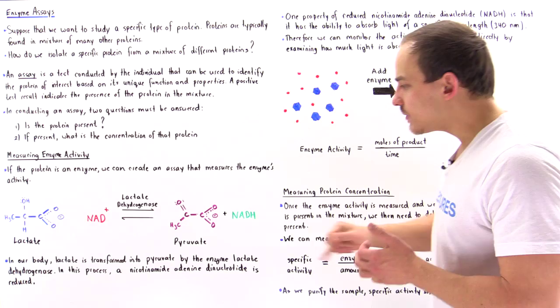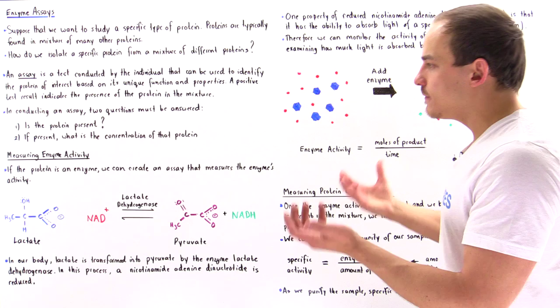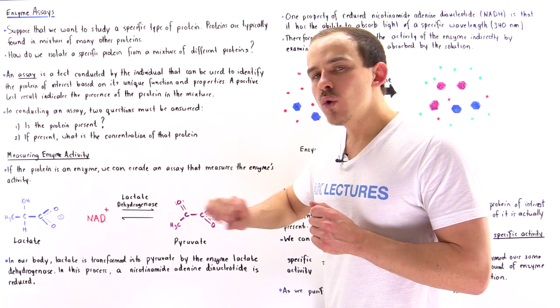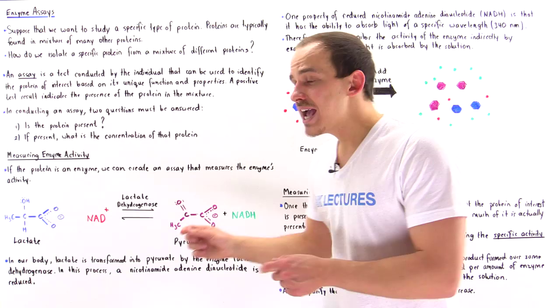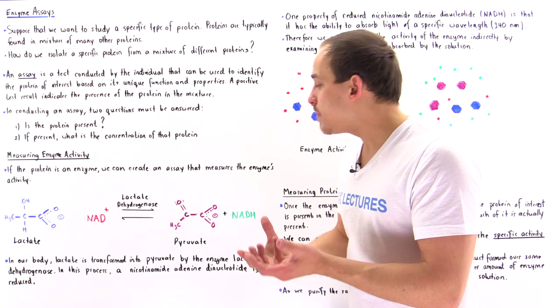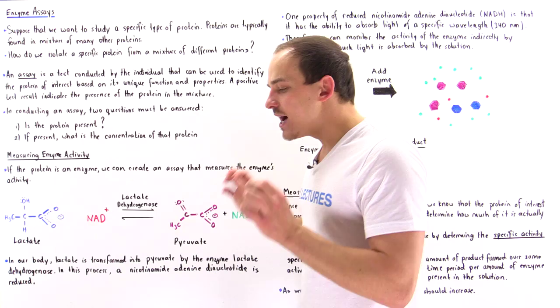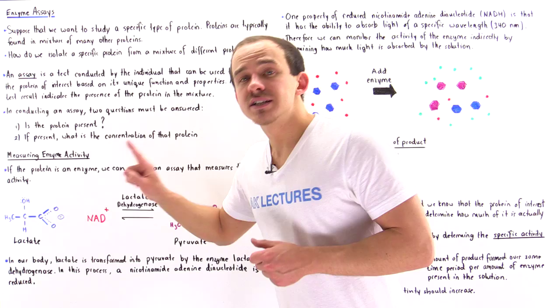In the process, we reduce NAD+ into NADH — NAD+ being the oxidized form of nicotinamide adenine dinucleotide, and NADH being the reduced form. So lactate is transformed into pyruvate, and in the process nicotinamide adenine dinucleotide is reduced. Pyruvate and NADH are then used to form ATP, the energy molecules used by our cells. To measure the activity of this enzyme, we can measure how much product is formed — either pyruvate or NADH. Let's focus on NADH.